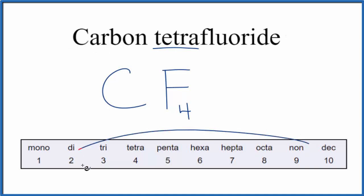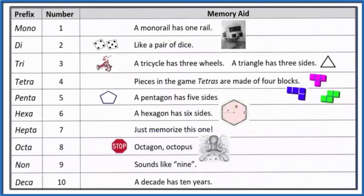If you need some help remembering these prefixes here, this is a table that'll help you do that. This is Dr. B with the formula for carbon tetrafluoride, CF4.